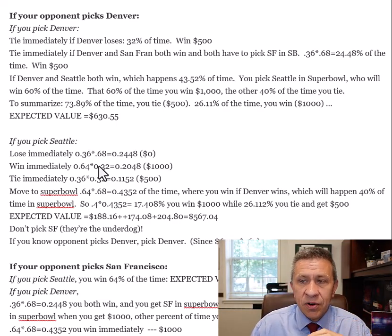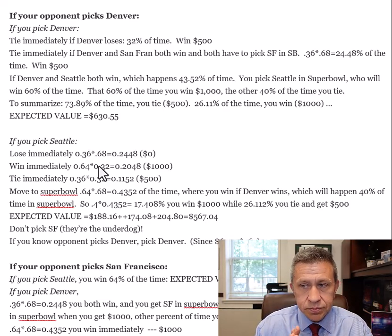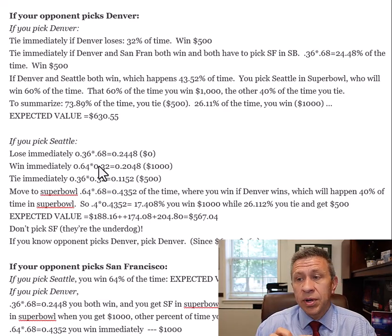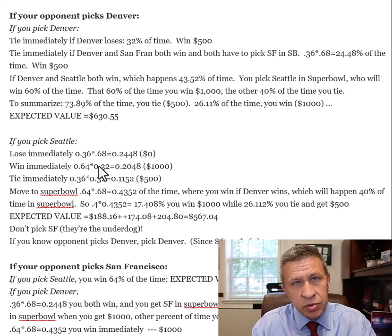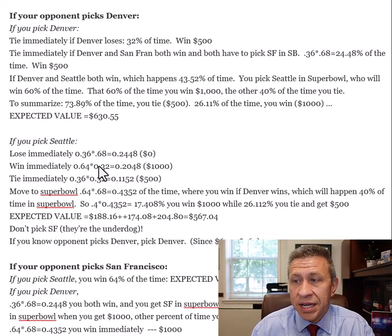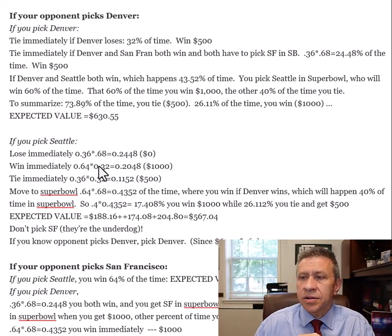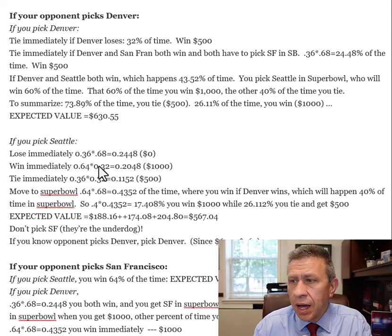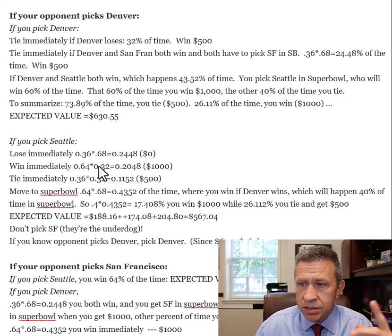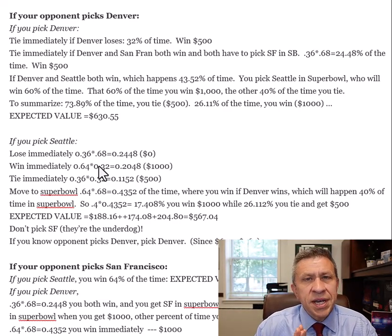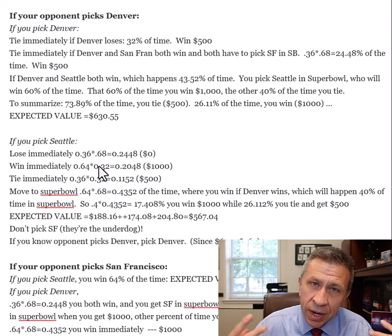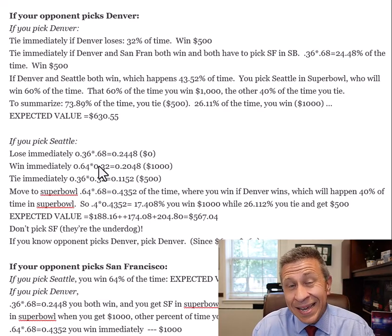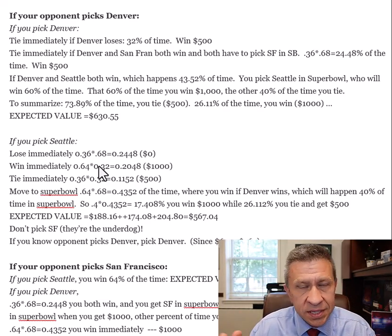If your opponent picks Denver and you pick Seattle: there's a chance you lose immediately when Seattle loses and Denver wins — you get $0. A chance you win immediately — $1,000. A chance you both lose — tie at $500. A chance you both advance to the Super Bowl, where you win if Denver wins in the Super Bowl, which happens 40% of the time. Expected value: $567. Since $631 beats $567, pick Denver if your opponent picks Denver.